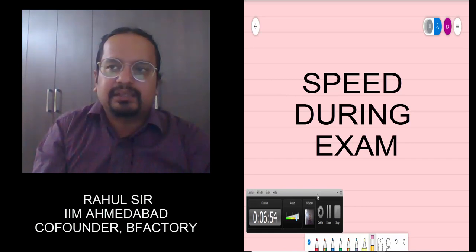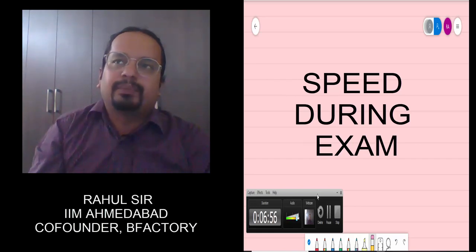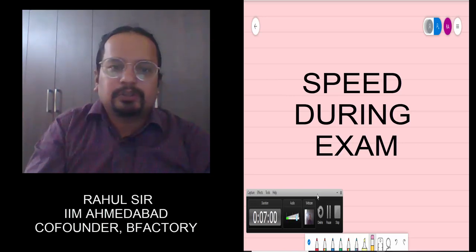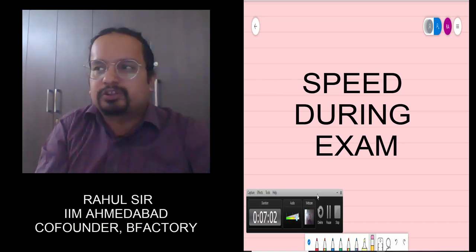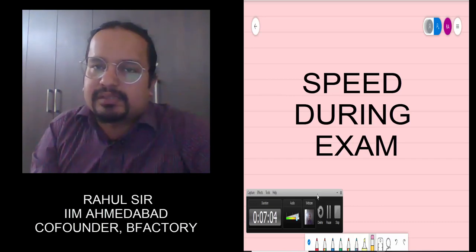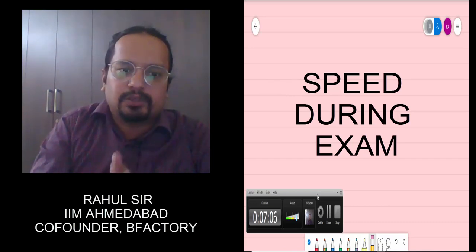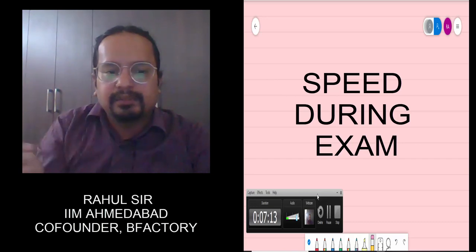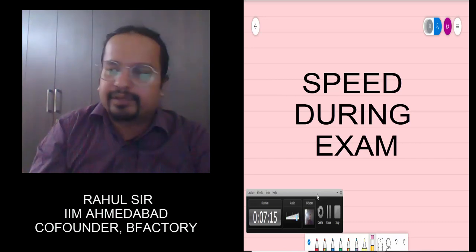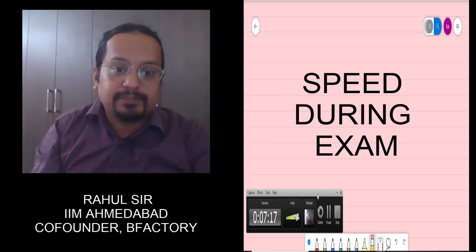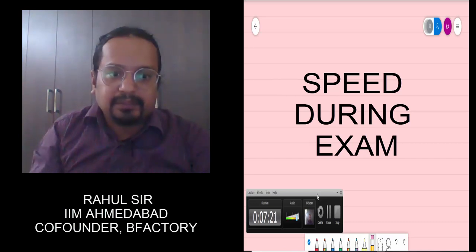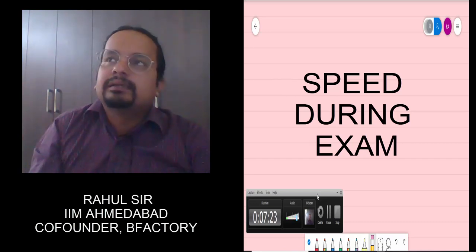In the verbal section, read the RC fast, noting down the central idea as described, then go to the questions and eliminate. Try to read all questions, but if you get stuck between two options and can't resolve it quickly, leave it. Four to five months before CAT, your reading speed and interpretation are still building, so accuracy should be your top priority. In verbal, know when you're sure and when you're not — if stuck between two options, leave immediately and move on.